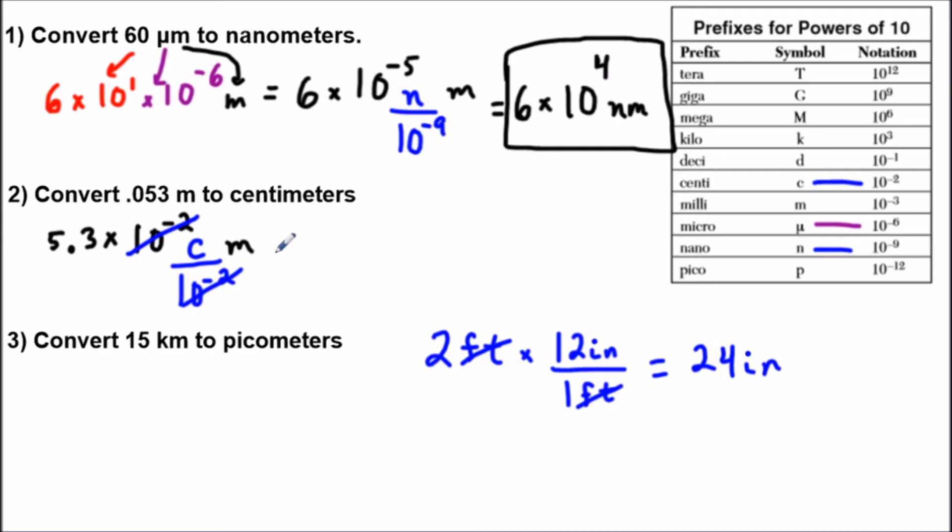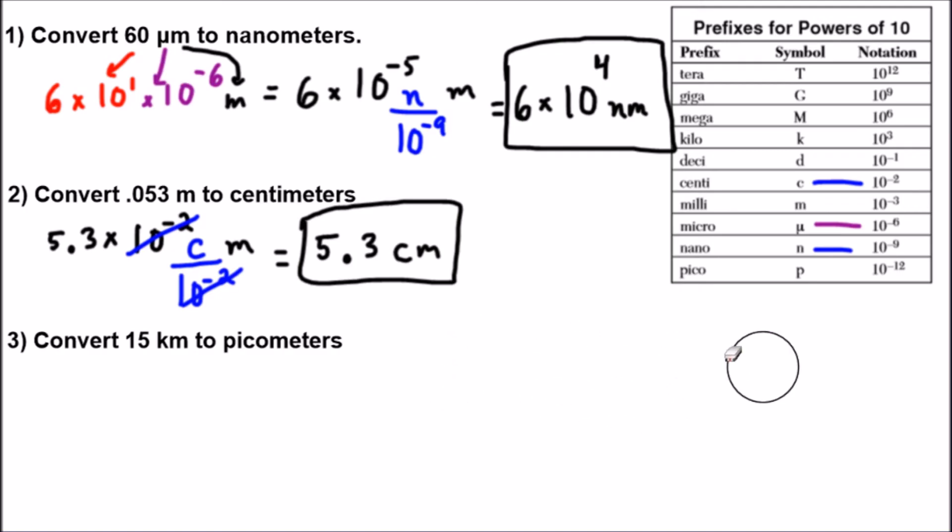And then the answer to the second question is just 5.3. And there's no powers of 10 remaining, so I could just write 5.3 centimeters. And that's my answer to the second question. We can now get this out of the way because I think we get the idea.